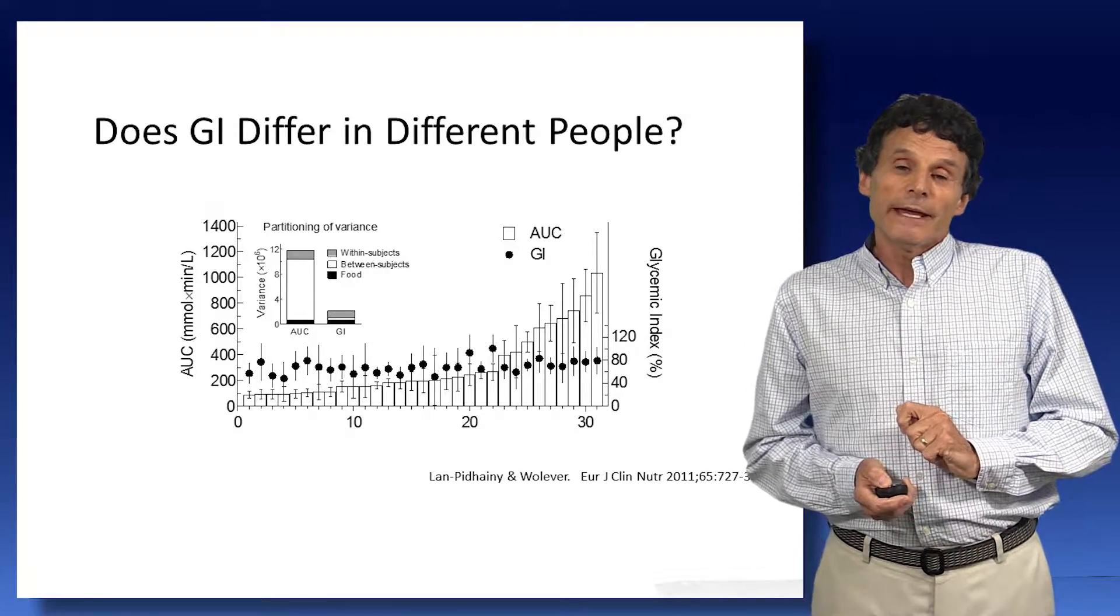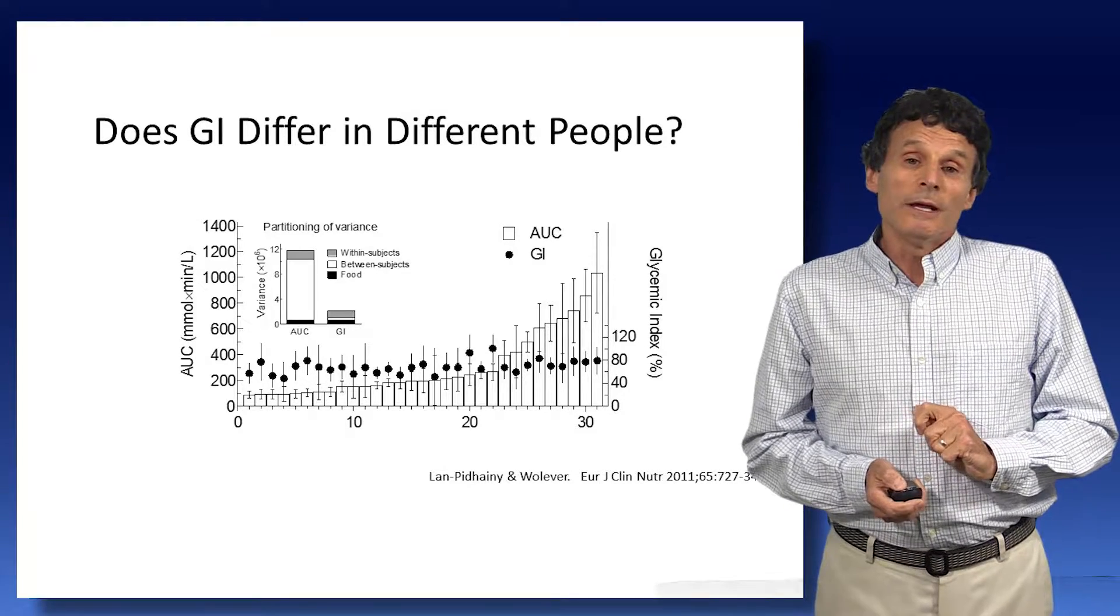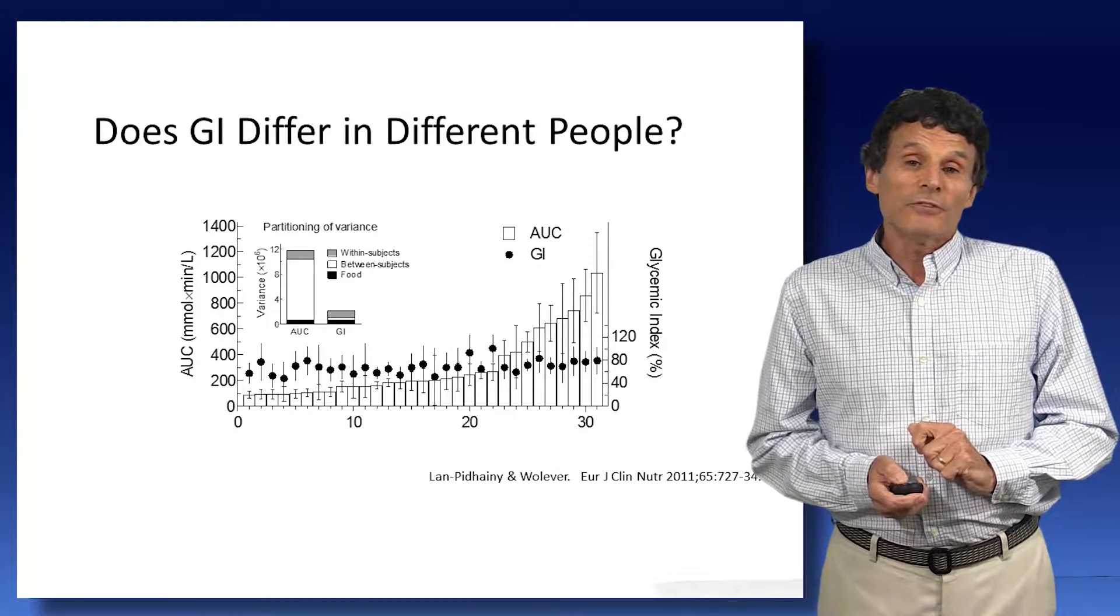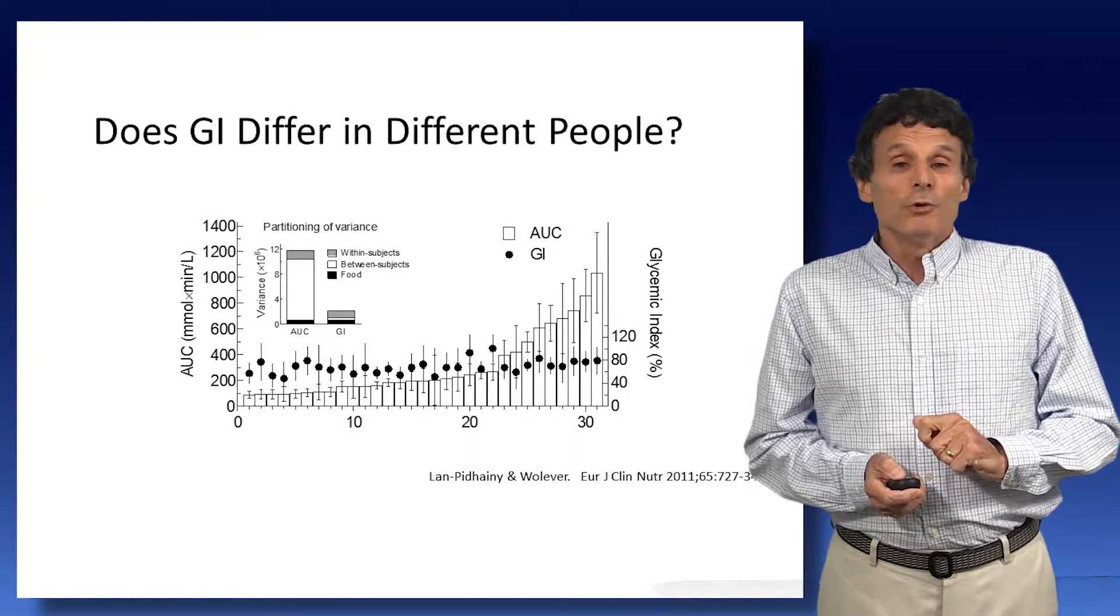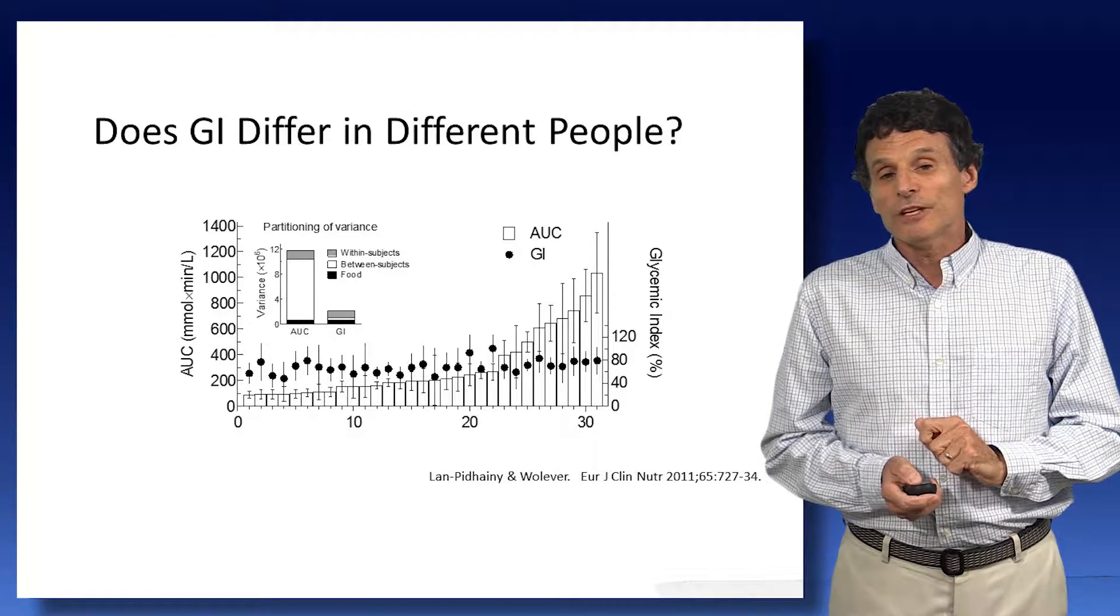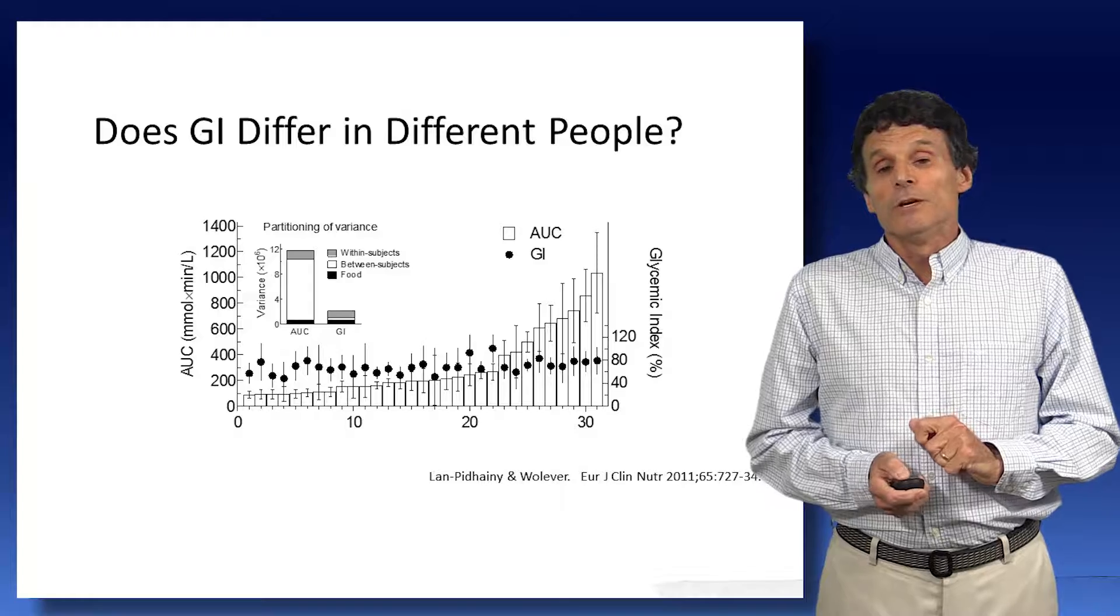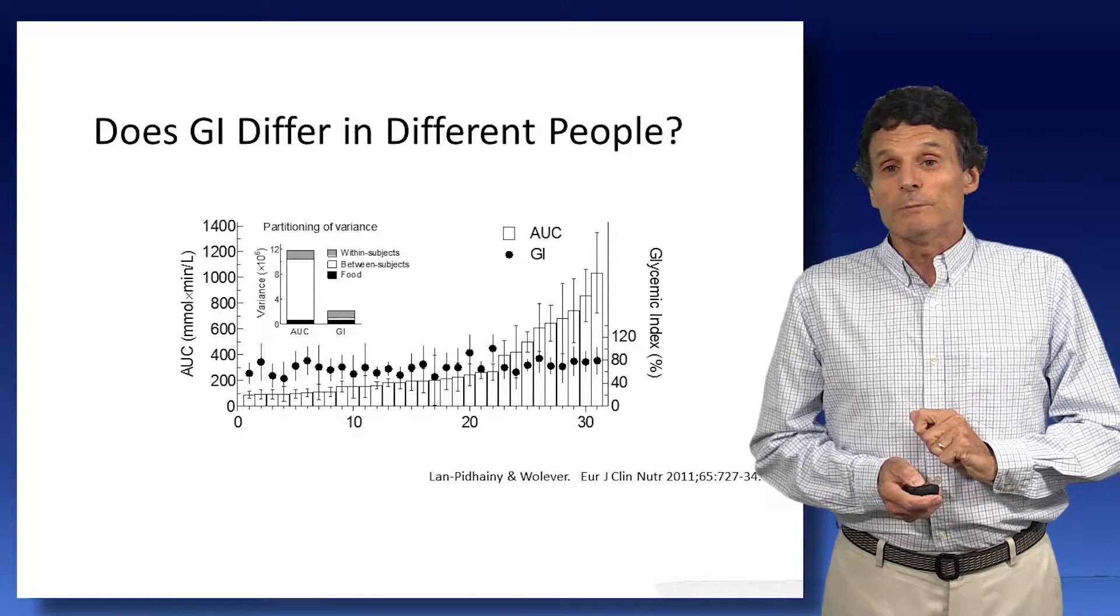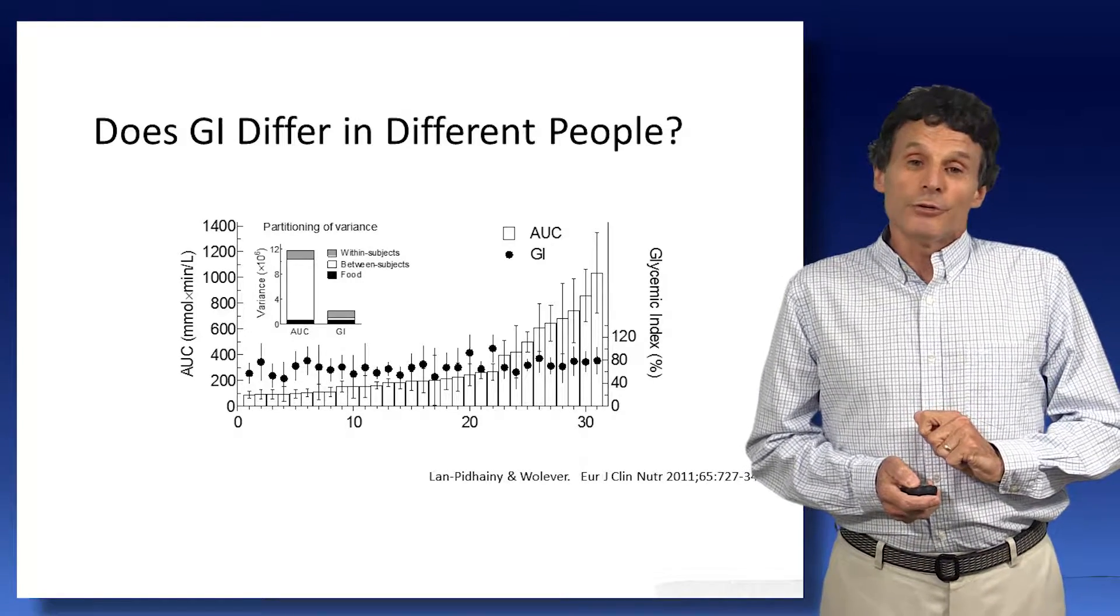And up in the top left corner of the graph, we see how the variation is partitioned using analysis of variance. Most of the variation, the white bar, is the area, is between subjects. And the effect of expressing it as GI, in fact, reduces this variation between subjects to virtually zero, to be non-significant. So in fact, this does normalize responses between people, and its value does not differ.